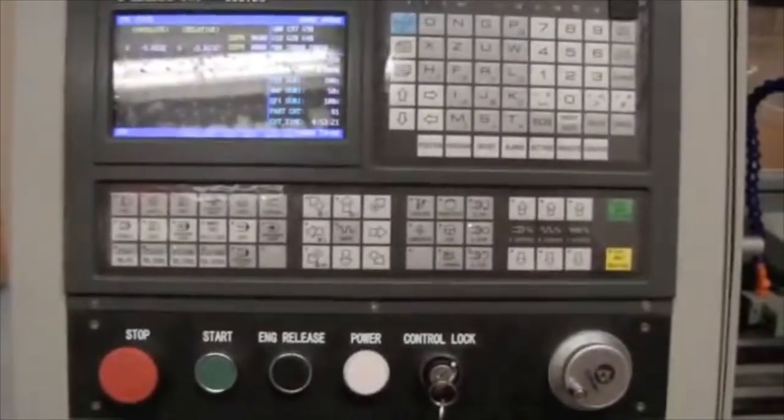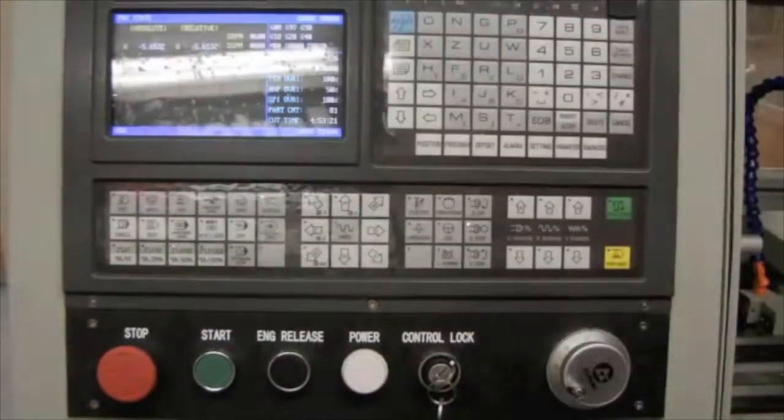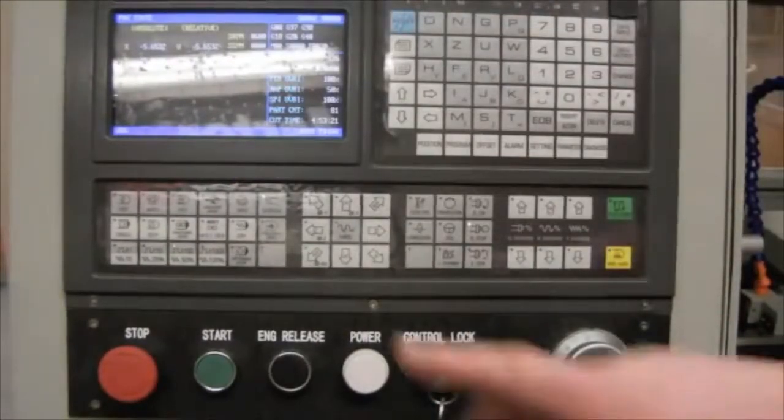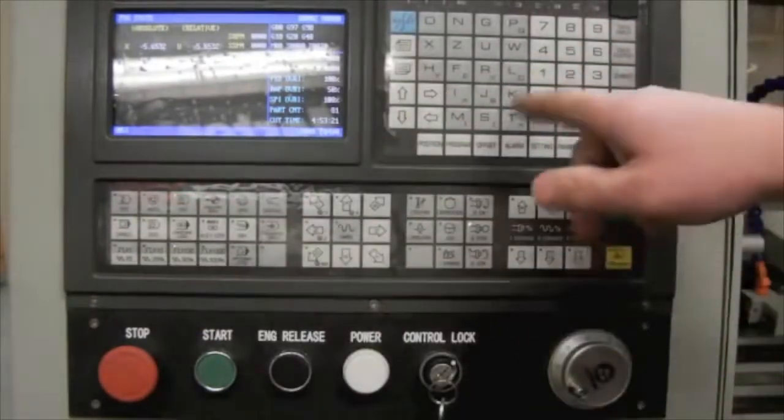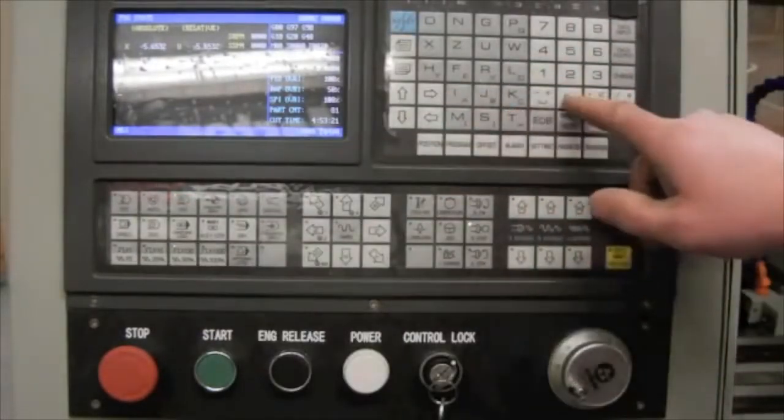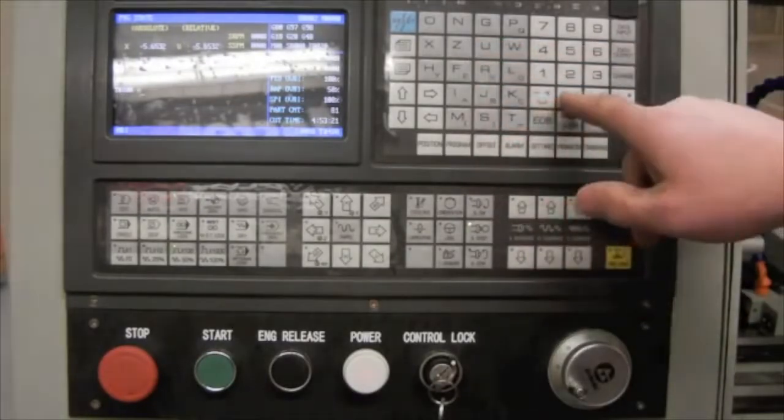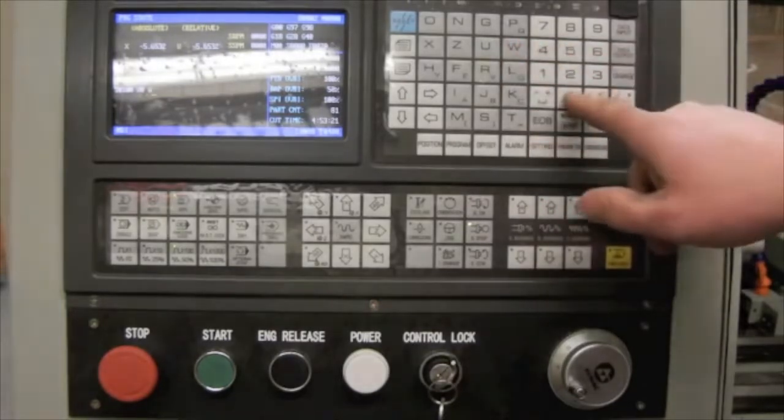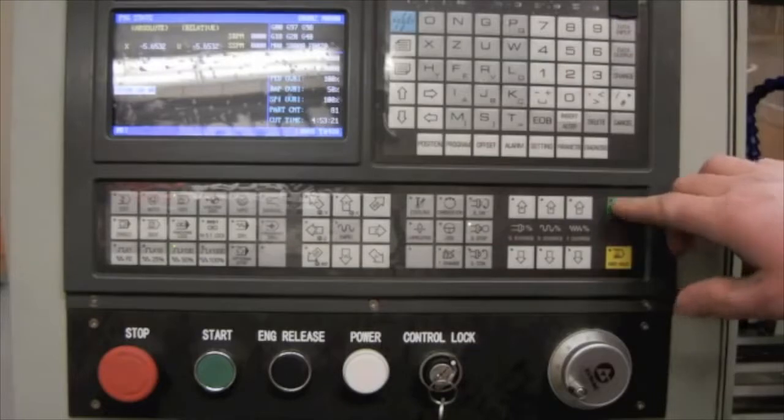Now back to our controller. In the program state window, I'm going to clear all offsets. I'm going to do that by pressing the MDI key, and I'm going to enter T0100, U0, W0. Press data input, cycle start.